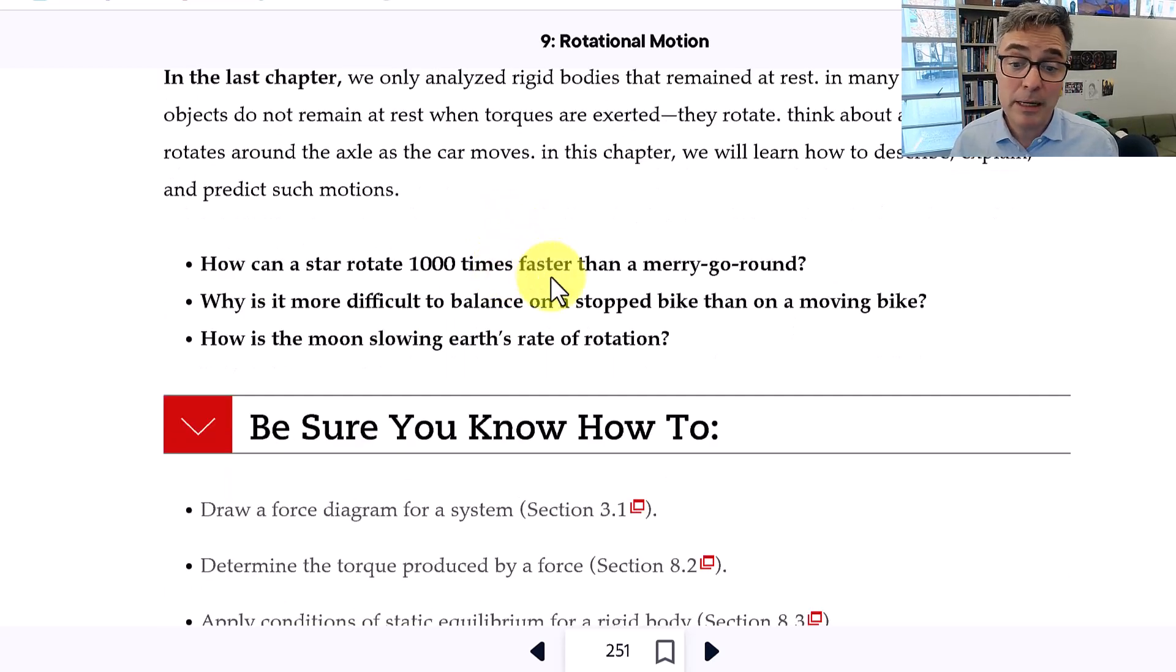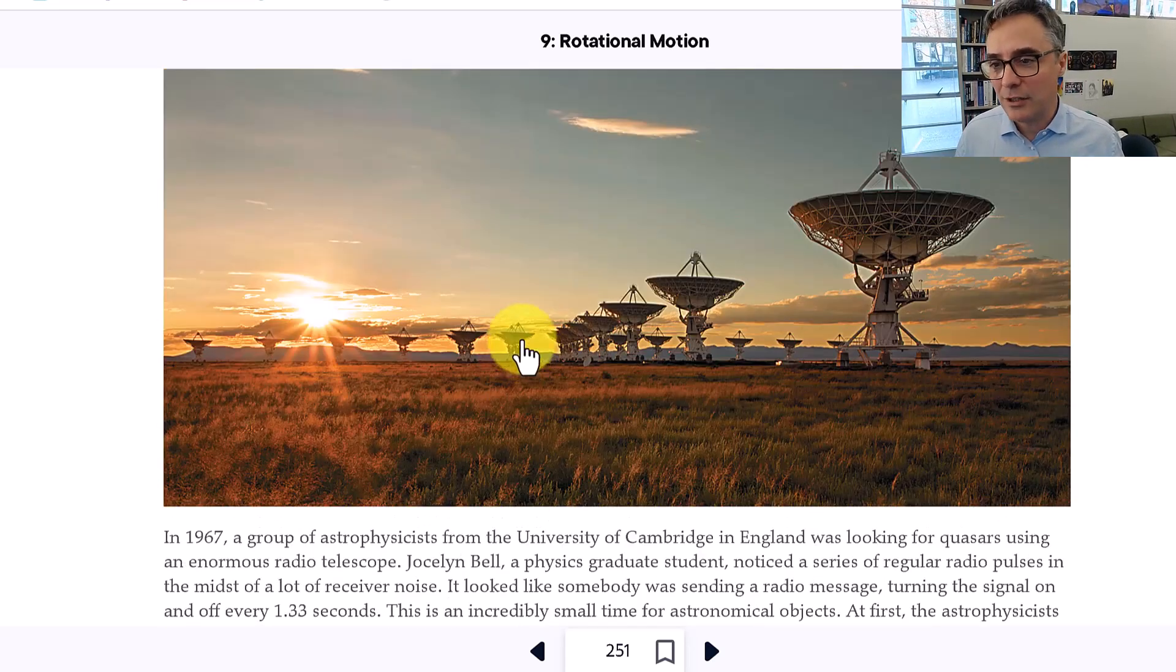Why is it more difficult to balance on a stopped bike than a moving bike, which is about conservation of angular momentum, rotational momentum, and how is the moon slowing the earth's rate of rotation? So that's just a little intro.